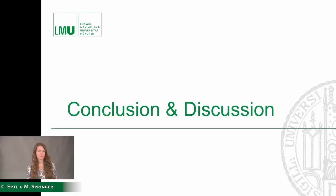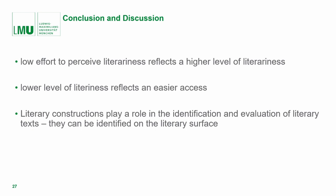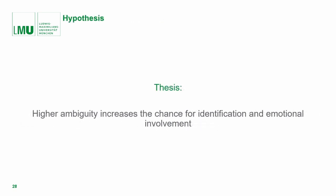Let's look at our conclusions, the points to discuss, and an outlook. The initial results indicate that low effort to perceive literariness reflects a higher level of literariness. A lower level of literariness reflects easier access. Literary constructions play a role in the identification and evaluation of literary texts — they can be identified on the literary surface. Our new thesis is that higher ambiguity increases the chance for identification and emotional involvement.